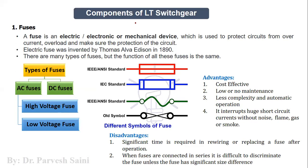Now let us come to the components of LT switchgear. The first category is a fuse. Fuse is the oldest way of protecting electrical systems — it is the cheapest and most cost effective method used to protect electrical appliances and circuits from any kind of overcurrent that occurs in the main supply. These are the symbols used for the fuse, based on international standards of electricity.